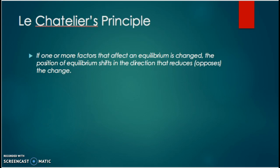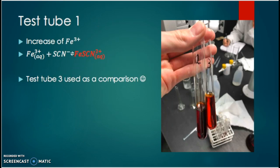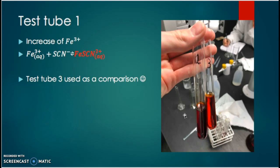In test tube one, we increased the concentration of iron three plus ions, which is one of the reactants on the left side. When we added the Fe³⁺ ions to the solution, the chemical equilibrium was broken and it tried to reestablish equilibrium. You can see in the picture that the solution has turned darker red compared to the normal equilibrium solution, which means that the reaction to the right occurs and products are being formed to reestablish the chemical equilibrium.